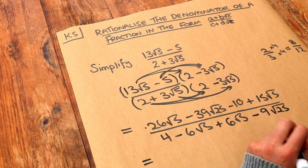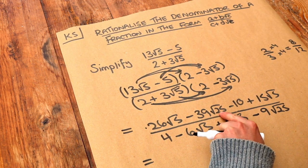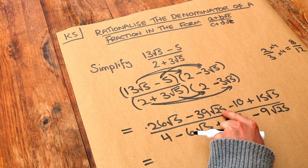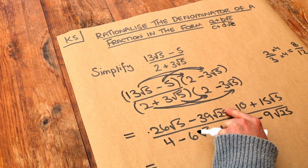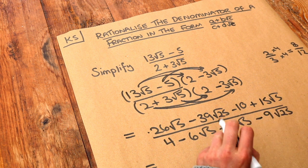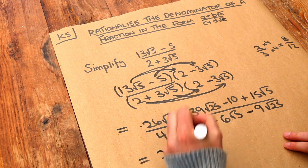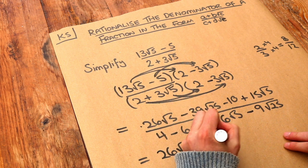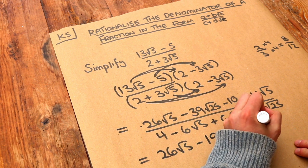And now let's just simplify. Note that root 25, because 25 is a square number, that's just 5. And 39 times 5, I'll cheat by using my calculator, is 195. So we have 26 root 5 minus 195 minus 10 plus 15 root 5.